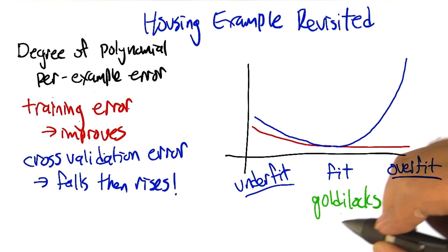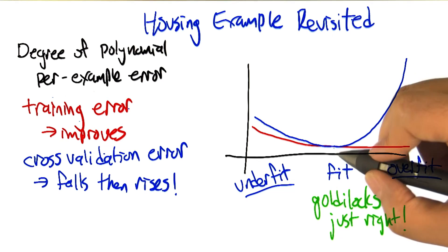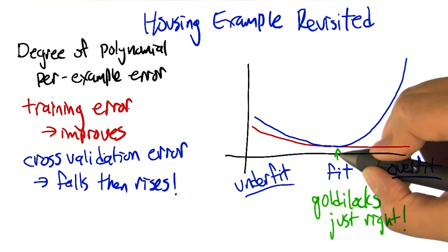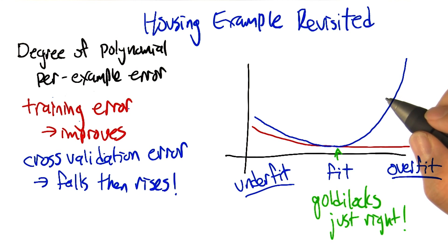And somewhere in between is kind of the Goldilocks zone where we're not underfitting and we're not overfitting—we're fitting just right. And that's the point that we really want to find. We want to find the model that fits the data without overfitting and not underfitting. So what was the answer on the housing example?